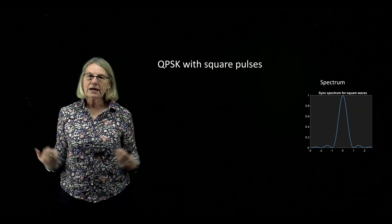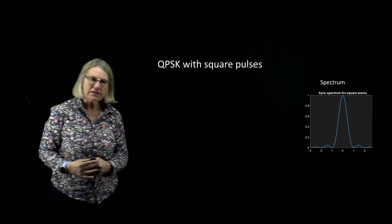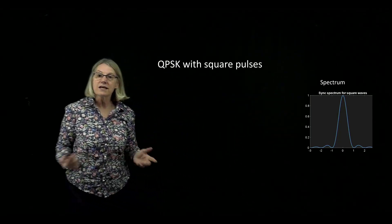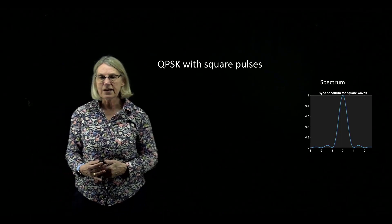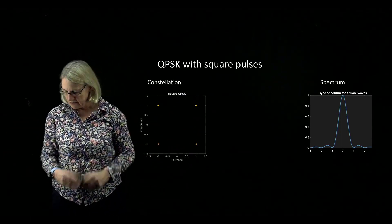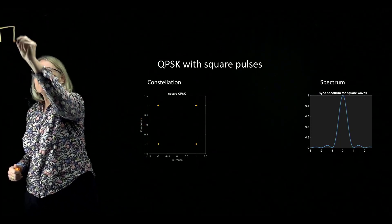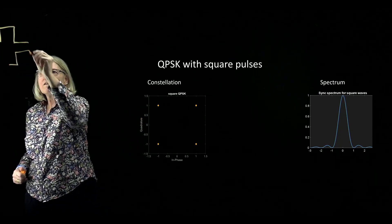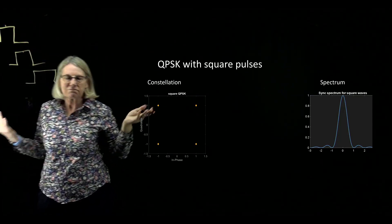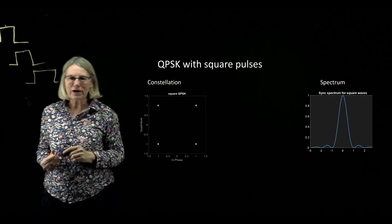So again, QPSK with square pulses. Square pulses in the time domain mean that if I look at the spectrum in the frequency domain it would be a sinc function, and that's the form we see here. The constellation has each symbol at plus and minus one, so there are really four points.